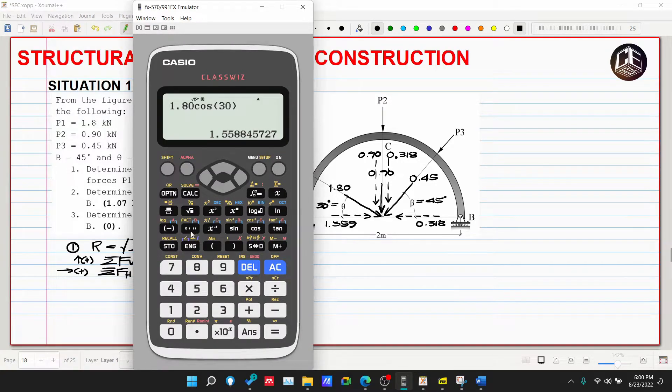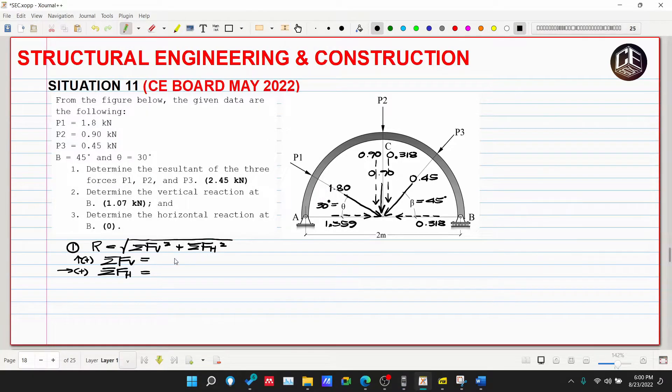So lahat ng vertical downward, negative 0.90 minus 0.90 minus 0.318, so this is negative 2.118 kilonewton. Since negative yan, ang direction ng ating effect para sa force system is downward. Sa horizontal naman, 1.559 is positive then 0.318, this is 1.241 kilonewton.